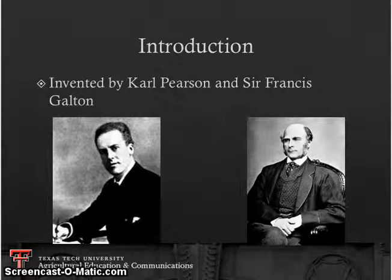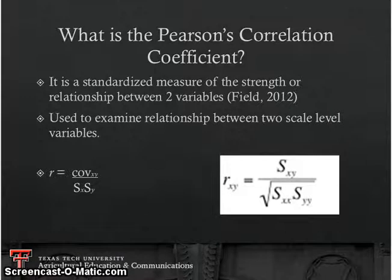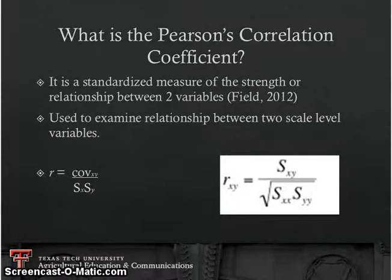In order to actually run a Pearson product moment correlation we have to first understand the makings of this correlation and exactly what is entailed in the equation. The Pearson product moment correlation is the standardized measure of the strength or relationship between two variables. When we look at the scale of measurement, it has to be scale level data — so either interval or ratio.